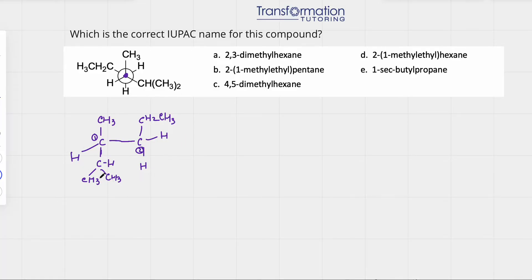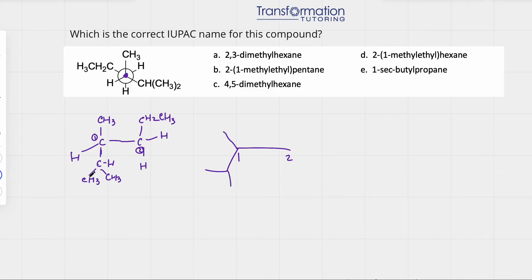At this point you can name it, but I find the line-angle formula is much easier to look at. So I'm going to redraw the molecule using the line-angle formula. Carbon one has a methyl group and an isopropyl group — a carbon attached to two methyl groups. Carbon two has an ethyl group, so two more carbons. That's the molecule.